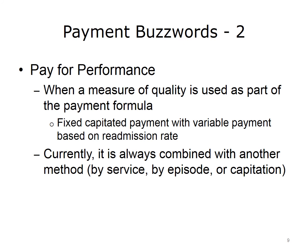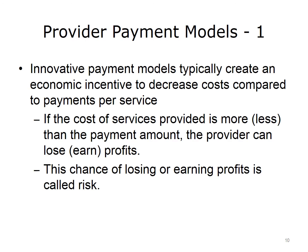In a pay-for-performance model, a measure of quality is used as part of the payment formula — for instance, a capitated payment rate that varies based on readmission rate as a measure of quality. Because performance cannot be measured in all aspects, it's always combined with another method such as service payments, episode, or capitation. Innovative payment models typically create an economic incentive to decrease costs, and this chance for earning or losing profits is called risk.